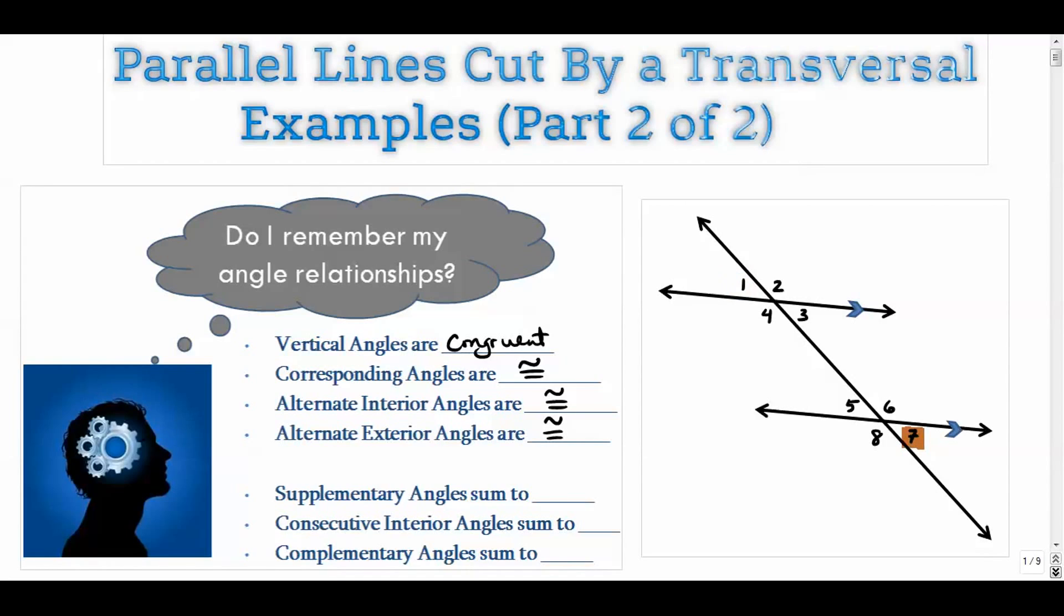Supplementary angles. Supplementary angles sometimes are congruent, but most times they're not. But what's always true about supplementary angles is that the sum of the angles adds to 180. So four and three, they add up to 180.